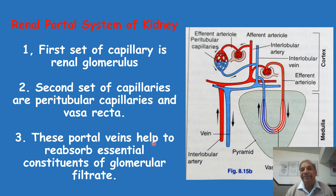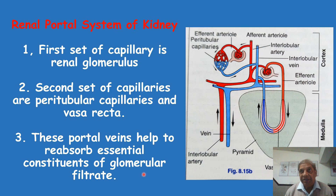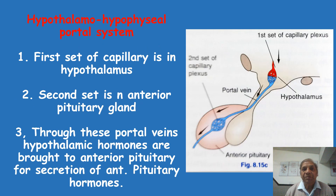These portal veins, especially in the vasa recta, help to reabsorb essential constituents of the glomerular filtrate. About 180 litres of glomerular filtrate is reabsorbed by this second set of capillaries — the vasa recta and peritubular capillaries. Thus they serve a very important purpose in the renal portal system.